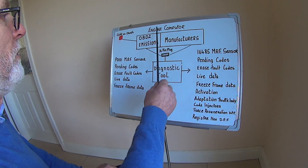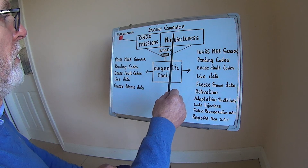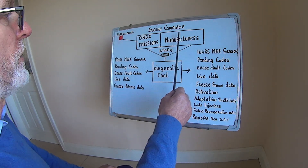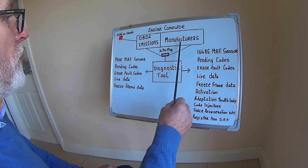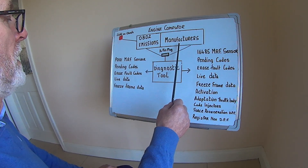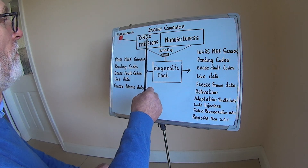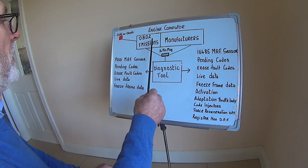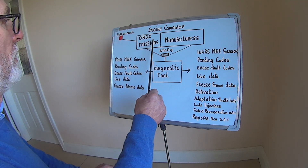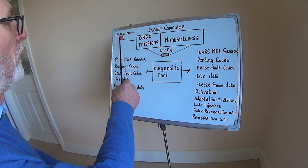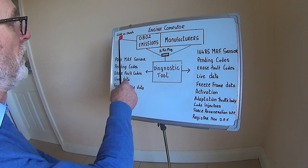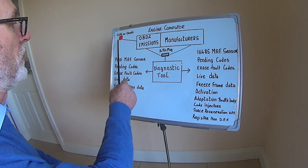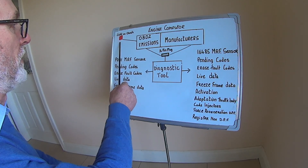Up here on top we have the engine computer — this is the manufacturer's side of the engine computer. And here we have OBD2, that's the OBD2 side of the engine computer. And over here we have the engine management light, the light that comes on the dash when there's a fault in the system.